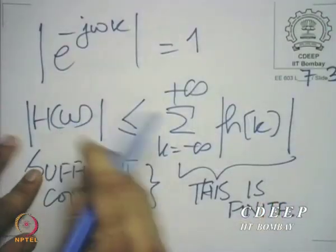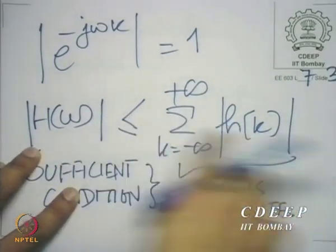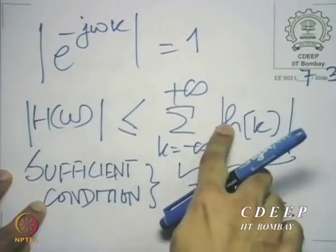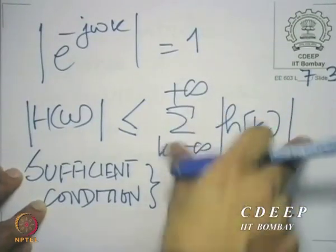We need to appreciate the meaning of this condition a little better. Mathematically we see it — it is a sum of absolute values. There is a question: on this page, what I have shown is that mod H(omega) is less than or equal to this absolute sum. So I am saying a sufficient condition for H(omega) to converge is that this sum is finite. I am not saying that this sum is necessarily finite, but if this sum is finite, then H(omega) converges — that is what I am saying.